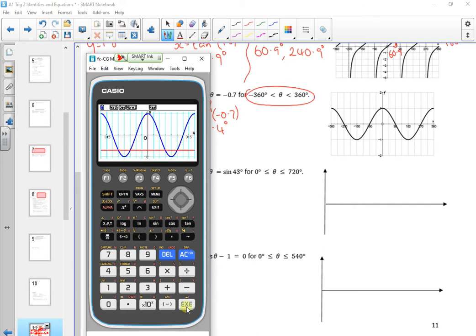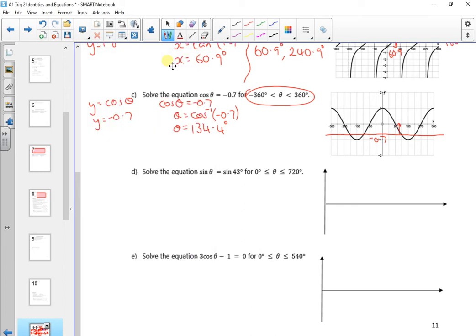There's my picture. So I'm going to add on the line for minus 0.7 all the way down here. And the first value was the 134.4. So 134.4 is there. I can use the symmetry. That distance is the same as that distance. So that other one would be 360 take away.